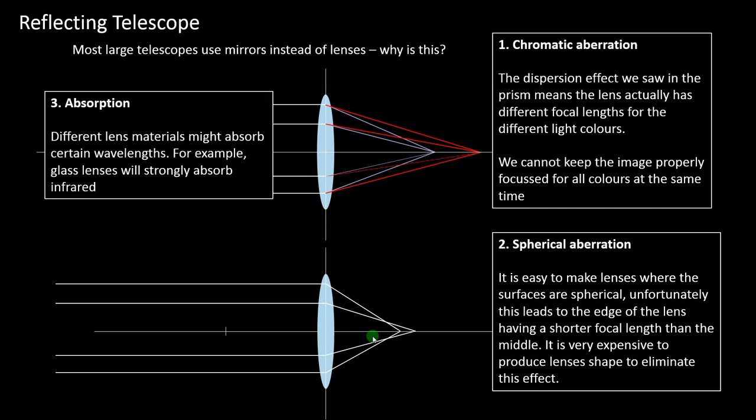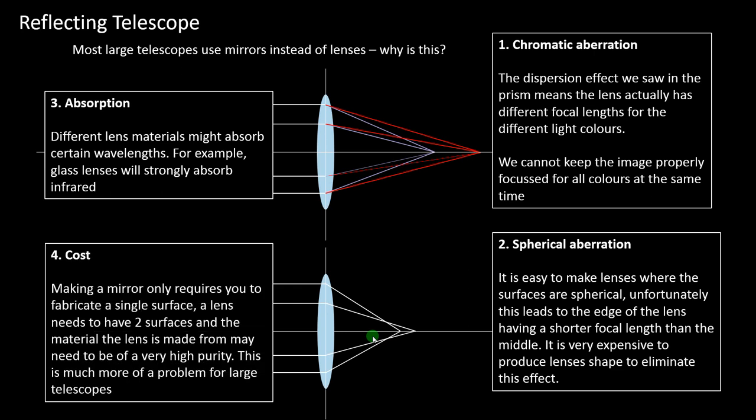Light traveling through lens material can be absorbed, which is a problem because we use the spectra of stars — the distribution of their light — to determine stellar composition and to measure redshift. If some light is absorbed in the lens, it can affect those measurements. Making a mirror only requires one single surface, which is easier and cheaper than making the two highly engineered surfaces needed for a lens. For high quality, you'd need very pure lens material, and these problems all get worse the bigger you make the lenses.